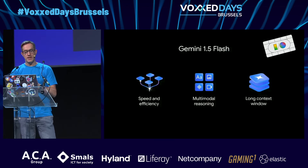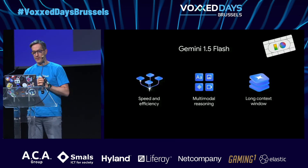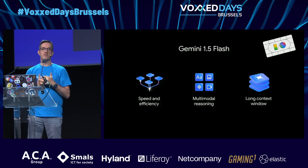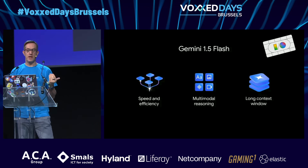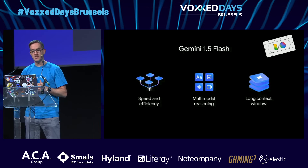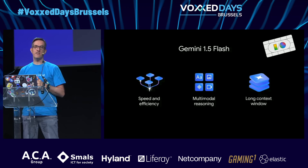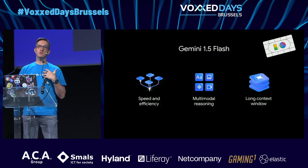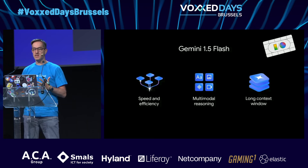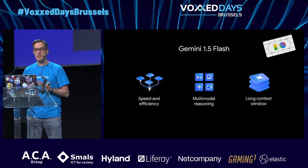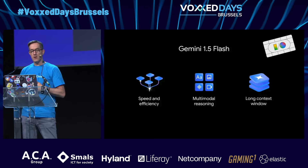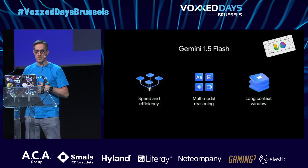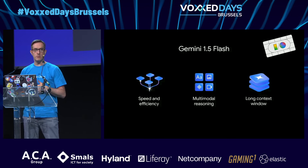There's an extra flavor of Gemini announced last week at Google I/O: Gemini 1.5 Flash. In terms of capabilities, it's pretty similar to Gemini 1.5 Pro, but it's much faster and more efficient. For example, the first tokens are streamed in less than a second.